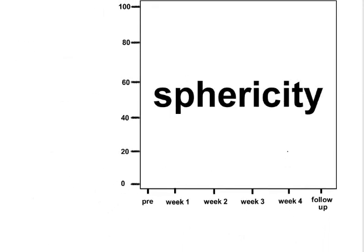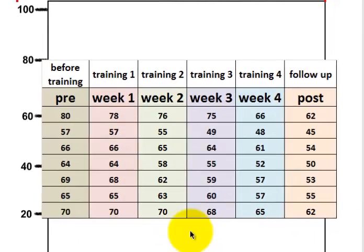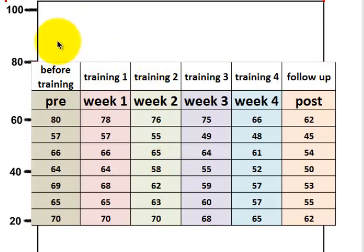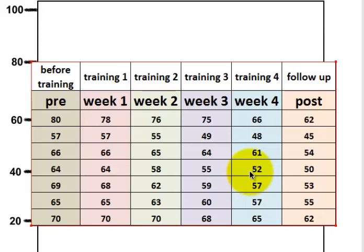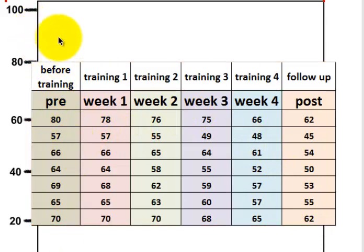We're going to take a set of data and check it for sphericity by using a graph. So here's a set of data - six different times. They did a pre-measurement and a post-measurement, and then they did four weeks of training. These numbers represent the number of claims for sexual harassment for a giant company with millions of employees. So they're going to try to see if the training was effective at lowering the number of filings with the HR department. The first thing we're going to do is graph them one column at a time.